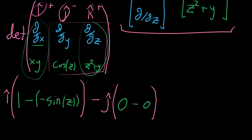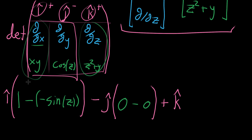Finally, we add the k component multiplied by its sub-determinant. This involves the partial derivative with respect to x of cosine z — no x's appear there, so that's just zero. Then we subtract the partial derivative with respect to y of x times y. Since x looks like a constant and y is the variable, that partial derivative is just x. So we're subtracting off x, giving a k component of zero minus x, which is negative x.